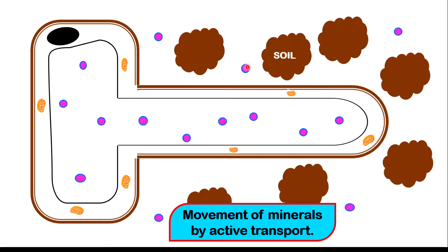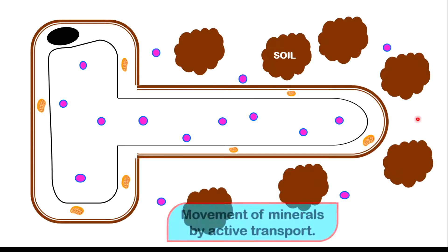If you observe these purple circular structures, they represent mineral salt. If you notice, they are less on the outside and more on the inside. Hence, these particles will move against the concentration gradient and rush from outside to the inside.